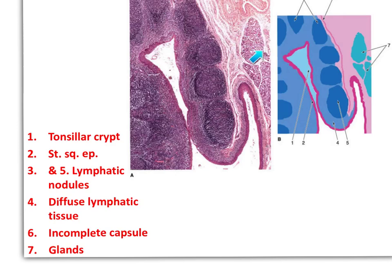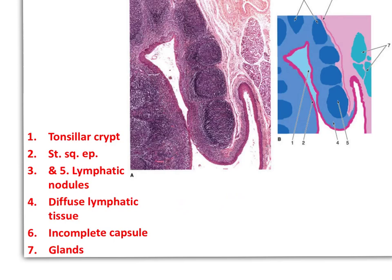A very important structure here is the mucus glands. These mucus glands are very characteristic for the tonsil. But in the palatine tonsil, these mucus glands do not open inside the crypt, so the crypt is not washed and it is a common site for infection. Also, some lymphocytes can penetrate this epithelium and appear in the saliva — they are called salivary corpuscles.